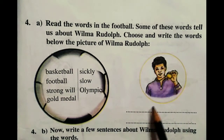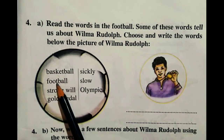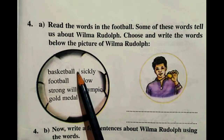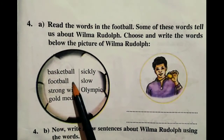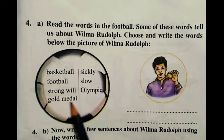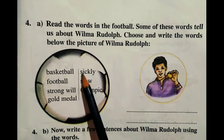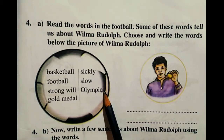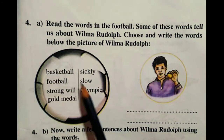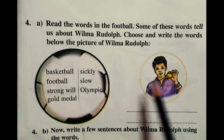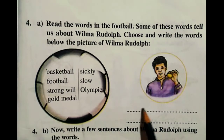Look at the picture. The words written inside the ball that are related to Wilma Rudolph include: basketball, football, strong will, gold medal, sickly, slow, Olympic.